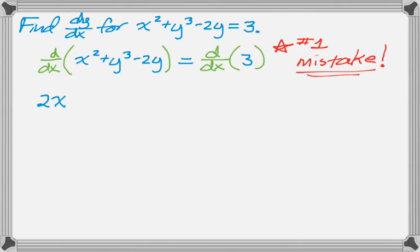So, derivative of x squared is 2x. The derivative of y cubed is 3y squared, but remember, y is a function of x, so we need to use the chain rule there. So it's 3y squared, and then dy/dx.